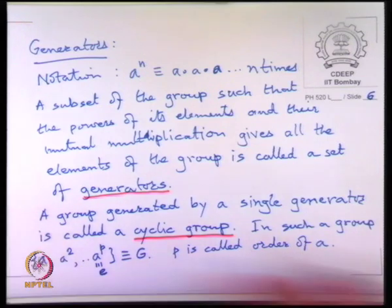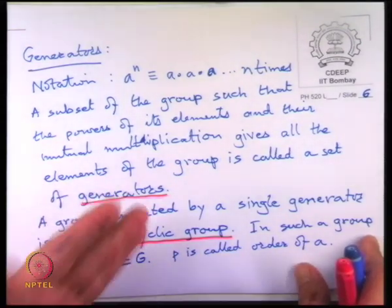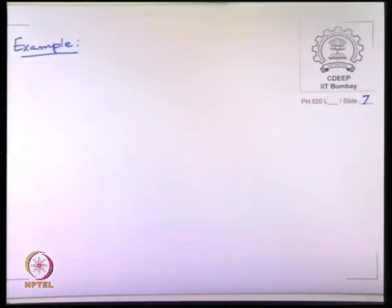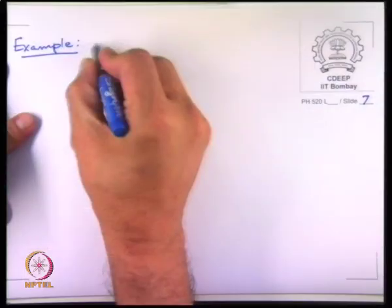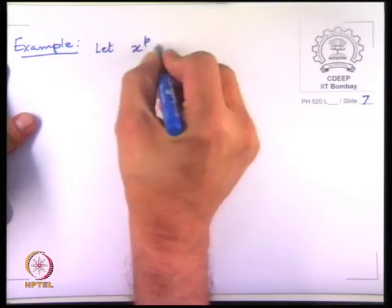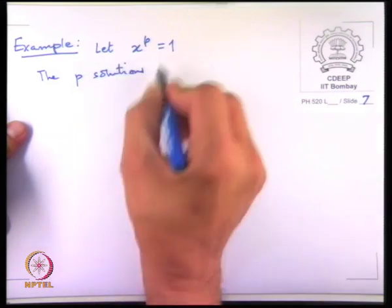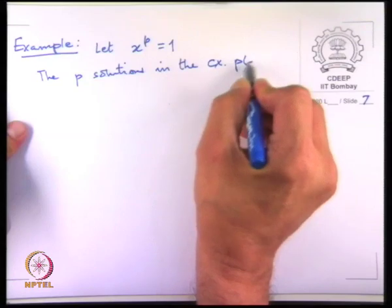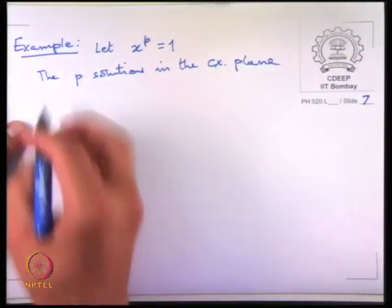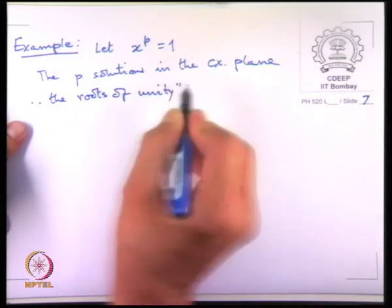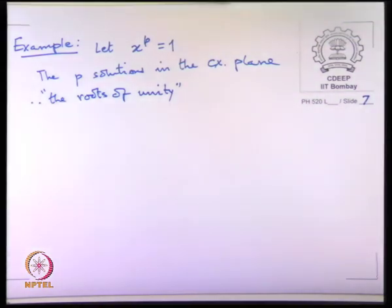We see one other example of a group. To complete this part, a very common example of cyclic groups is the p-th roots of unity. If you say x to the power p equals 1, the p solutions in the complex plane are called roots of unity, and these p solutions form a cyclic group.